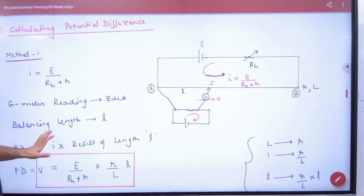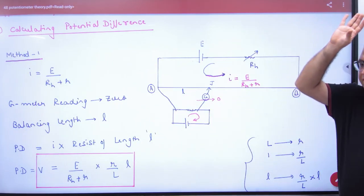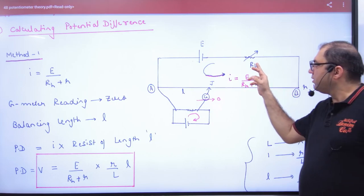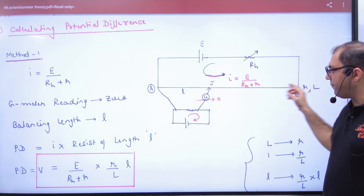What will you do in it? You have a potentiometer and EMF battery. Rhe is a rheostat. The potentiometer wire has resistance r and length L.